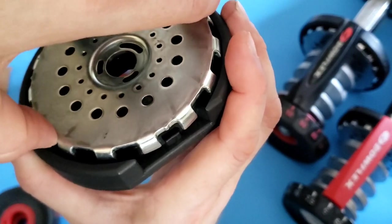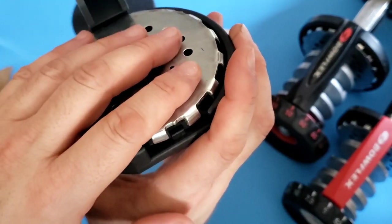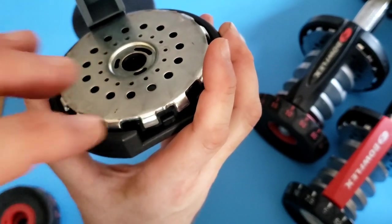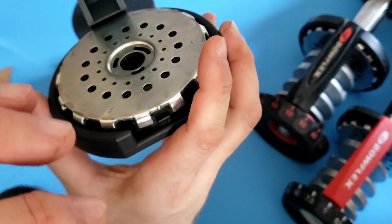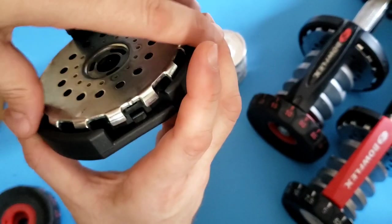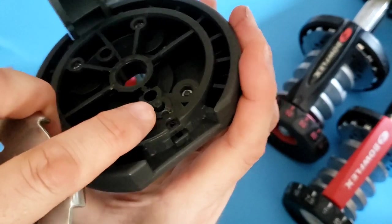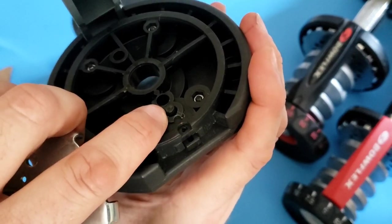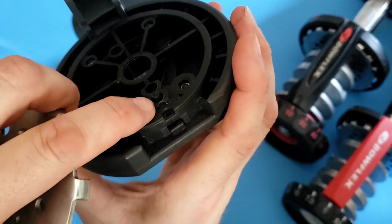And it locks into the plate and it keeps it from rotating when you're using your weights. That's how Bowflex designed this to not accidentally rotate while you're working out. Okay, a couple of things about this: one, it's a plastic component, it sometimes breaks.